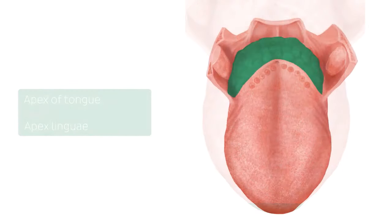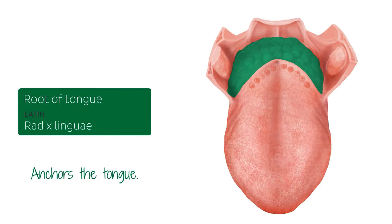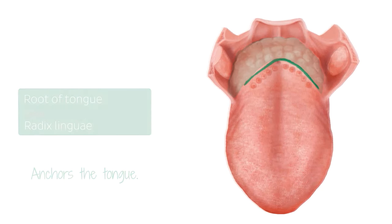The next structure is the root of the tongue, which is the posterior-most portion of the tongue. This structure anchors the tongue to the mandible and the hyoid bone. The root makes up one-third of the tongue, contains the lingual tonsils, and is separated from the body of the tongue by a v-shaped terminal sulcus.